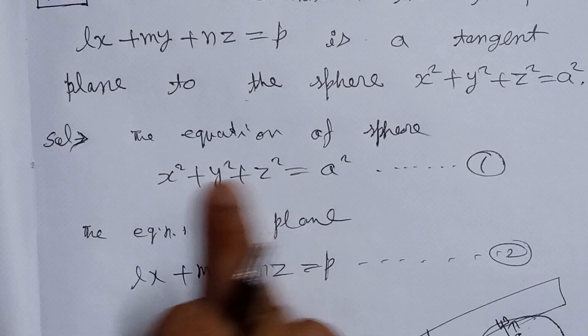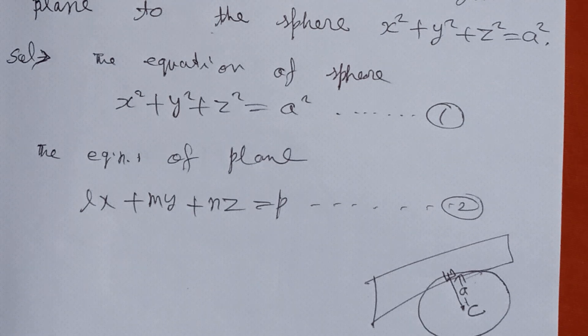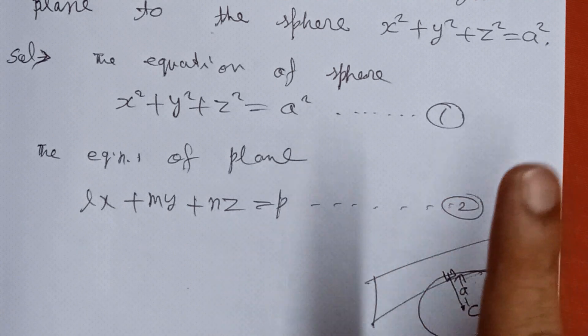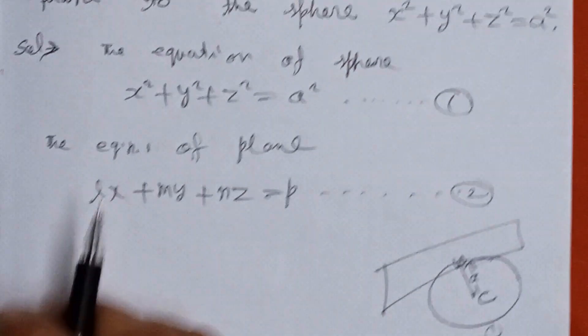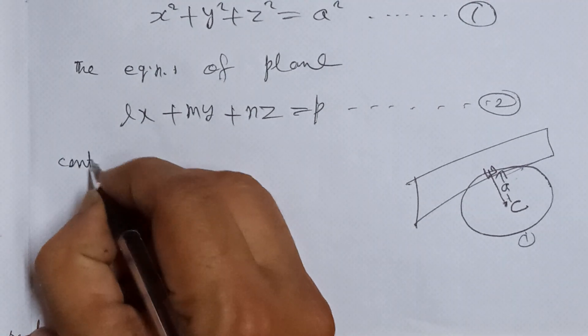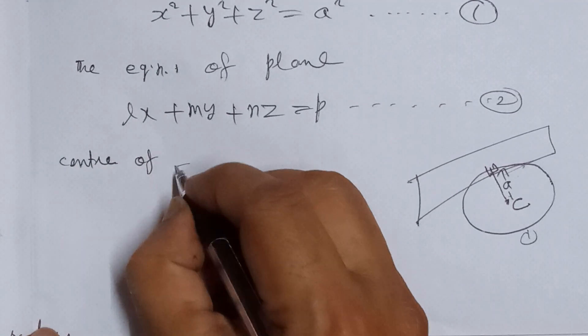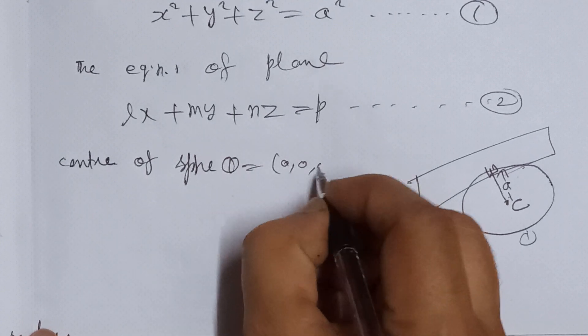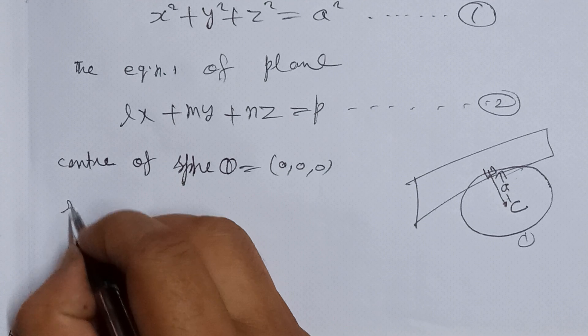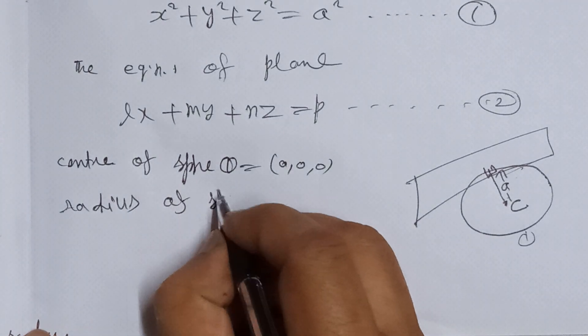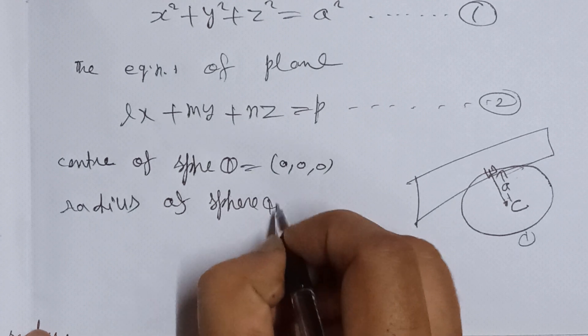We know that this equation of sphere is a standard equation of sphere whose center is at the origin and radius is A. The center of sphere 1 is (0, 0, 0) and the radius of sphere 1 is A.